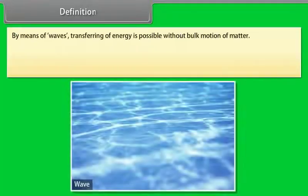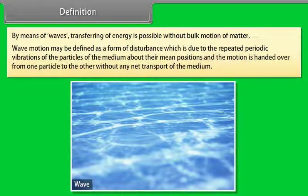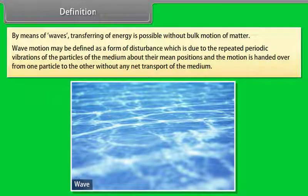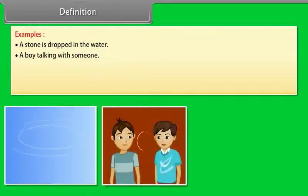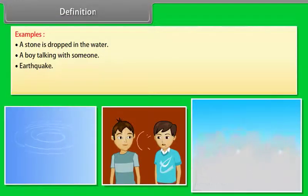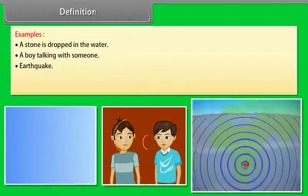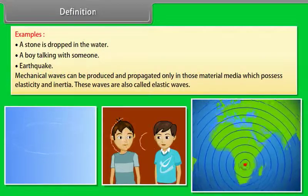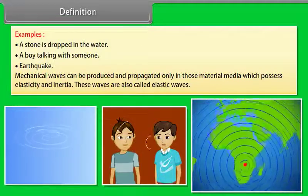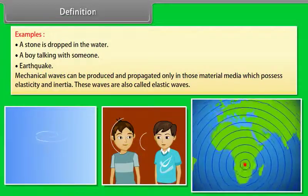By means of waves, transferring of energy is possible without bulk motion of matter. Wave motion may be defined as a form of disturbance which is due to the repeated periodic vibrations of the particles of the medium about their mean positions, and the motion is handed over from one particle to the other without any net transport of the medium. A stone dropped in water, a boy talking with someone, and earthquakes are some examples of wave motion. Mechanical waves can be produced and propagated only in those material media which possess elasticity and inertia. These waves are also called elastic waves.